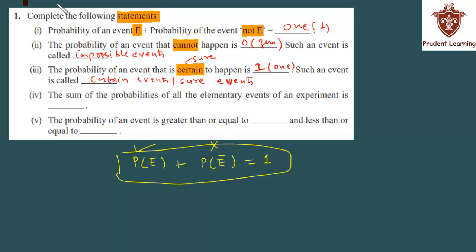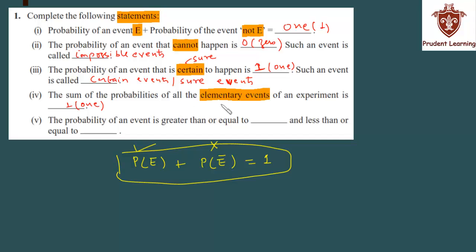Let us see the fourth section: the sum of the probabilities of all the elementary events of an experiment is — you already know this. For any experiment, the sum of the probabilities of all its elementary events is always 1. If you have any problem with this, you can refer to the theory, and in the further questions of this exercise, I will explain what elementary events are.